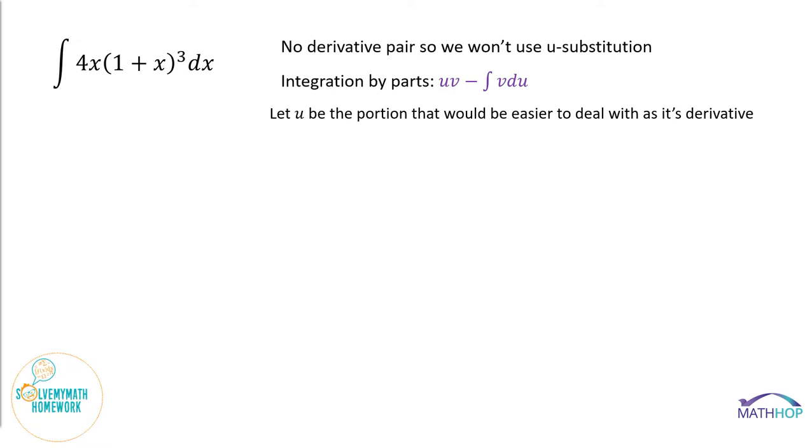After we do that, we are going to have u and dv identified, because whatever is not u will be the dv portion. Then we'll calculate du by deriving what we identified as u, and we'll integrate dv to get v. Then we'll plug it into the formula, and we'll simply evaluate and add a constant at the end.